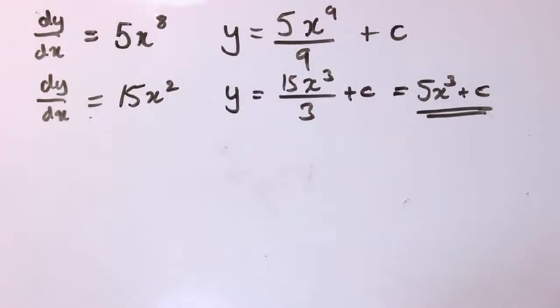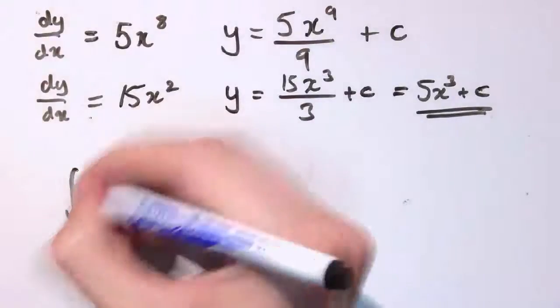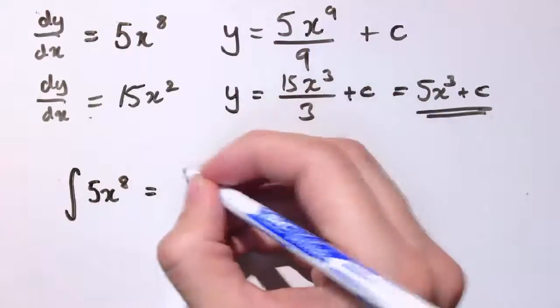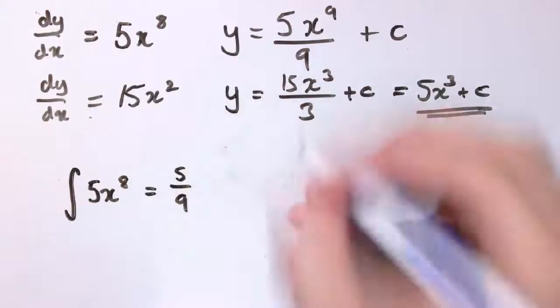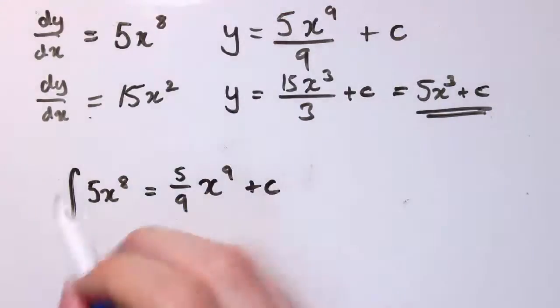Now, because we use integration all the time, we've got a special notation for it. So, I can summarize what I've done here for these two examples. So, let's do it for the first one, I could use this sign here. And if I write this, this means exactly what we've just done. I'm going to write the 5/9 here as a fraction outside. And this sign, sort of like a very stretched out s, means the integral.